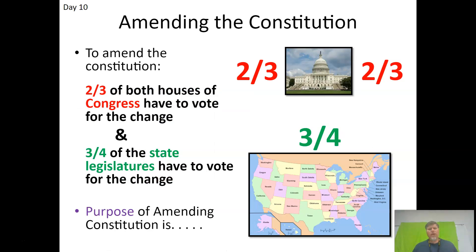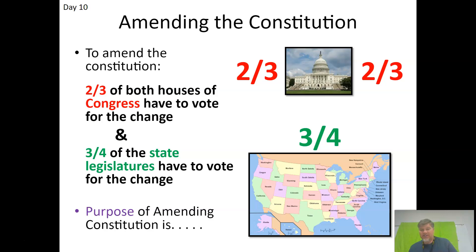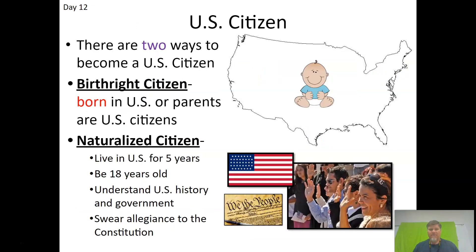To amend the Constitution, two-thirds of both houses of Congress must vote for the change — two-thirds of the House of Representatives and two-thirds of the Senate — and then three-fourths of the state legislatures must also vote for that change. The purpose of amending the Constitution is to allow changes to a document that has ruled our nation for over 200 years. The founders recognized there may be things in the future they hadn't prepared for and changes might be needed.